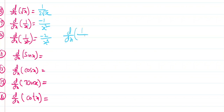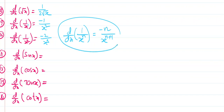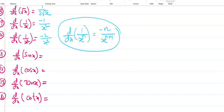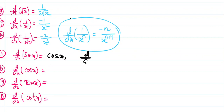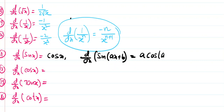d/dx of 1/x^n is equal to -n/x^(n+1) — this is a most important formula. d/dx of sin x is equal to cos x. d/dx of sin(ax+b): since the derivative of sin x is cos x, we multiply by d/dx of (ax+b), where the derivative of ax is a and derivative of b is 0, giving a·cos(ax+b). d/dx of cos x is equal to -sin x.